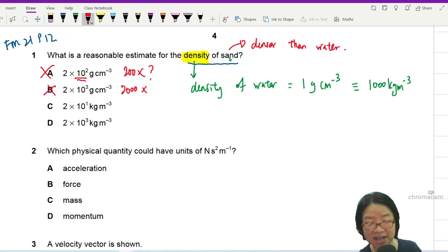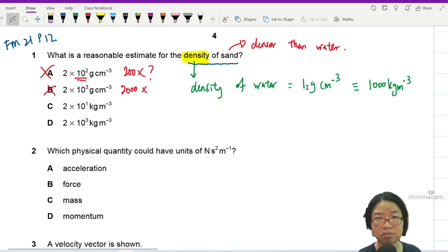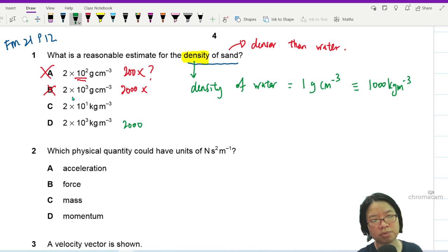The most dense element that we have, one of the most dense elements that we have is mercury and density of mercury is 13, 13.6 I believe. So 200 and 2000 is too out of this world already. And then if you look at these two, this one will be 2000, 2 times 10 to power 3 and this is 20. So 20 is too small and your answer will be D.